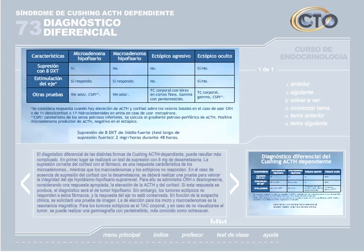El diagnóstico diferencial de las distintas formas de Cushing ACTH-dependiente puede resultar más complicado. Se realizará un test de supresión con 8 miligramos de dexametasona. La supresión correcta del cortisol es una respuesta característica de los microadenomas, mientras que los macroadenomas y los ectópicos no responden. En caso de ausencia de supresión, se realizará una prueba para valorar la integridad del eje hipotálamo-hipofisario-suprarrenal mediante la administración de CRH o desmopresina. Si existe elevación de ACTH y cortisol, el diagnóstico será tumor hipofisario. Los tumores ectópicos no responden a estos fármacos y la respuesta del eje no está conservada.